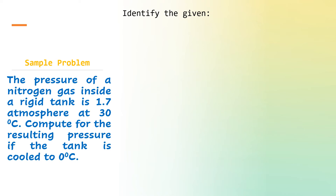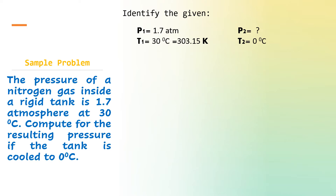The first thing we should do is identify the given. Initial pressure is 1.7 atmosphere. Initial temperature is 30 degrees Celsius. We are solving for the final pressure, so we put a question mark there. The final temperature is 0 degrees Celsius. Remember that we need to convert the temperature to Kelvin. Our initial temperature is now 303.15 Kelvin — we just added 273.15 to 30 degrees Celsius. And the final temperature is 273.15 Kelvin.